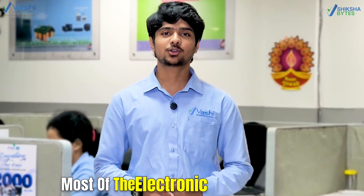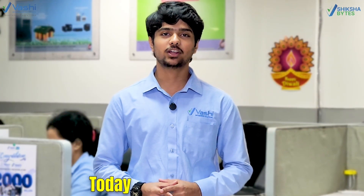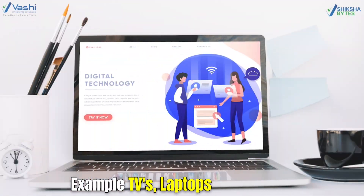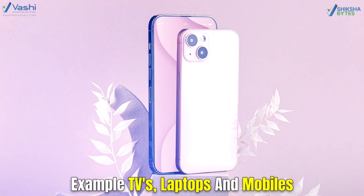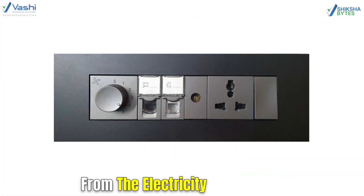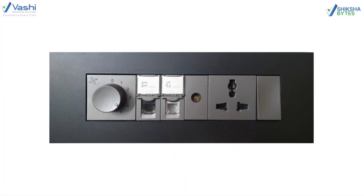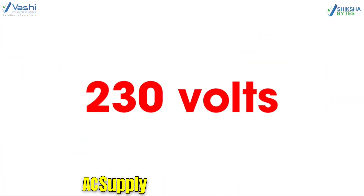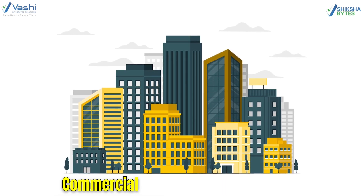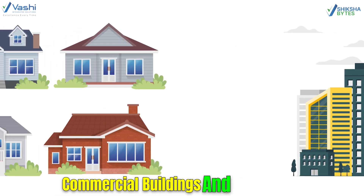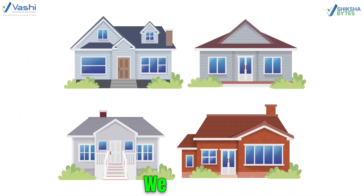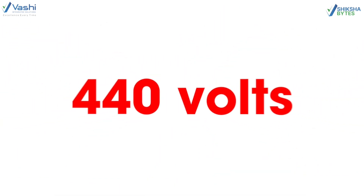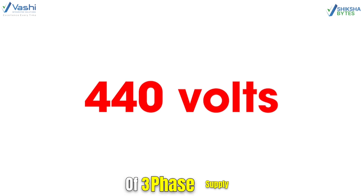Most of the electronic components of today operate on DC voltage — for example, TVs, laptops and mobiles. From the electricity boards, at our homes we receive 230 volts of AC supply, and in the industries, commercial buildings and bungalows, we receive 415 or 440 volts of 3-phase supply.